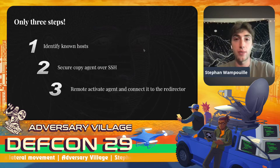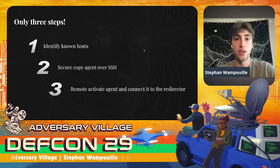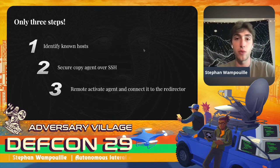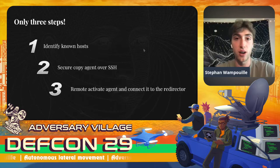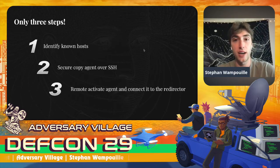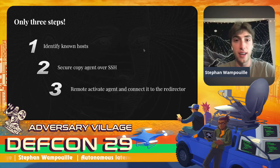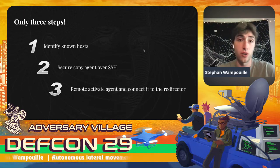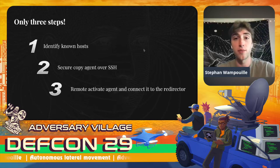There are really only three steps, and in this first half of the talk I'll describe the on-paper details of the attack. Step one is to identify any known hosts on workstation A. Step two is to use those known hosts to secure copy an agent — the NUMA agent that Prelude supports — over an SSH connection to workstation B. Step three is to remotely activate that agent over SSH and have it connect back to our AWS redirector. I found secure shell connections to be versatile and on the simpler side for me to understand.